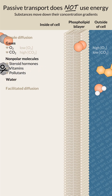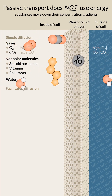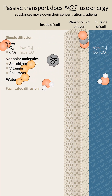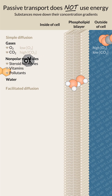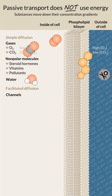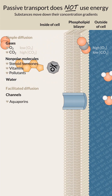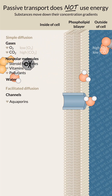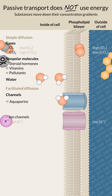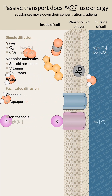In facilitated diffusion, proteins in the membrane work like doors to help move substances into or out of the cell. One class of these proteins is channels. Water can move quickly through pipes called aquaporins, and there are ion channels that conduct specific ions.